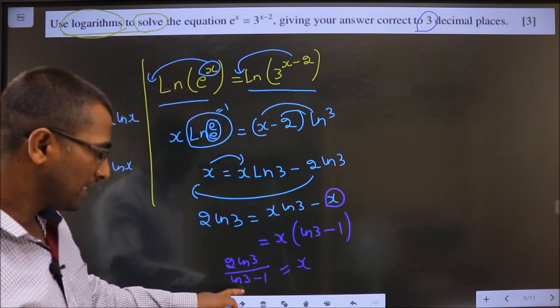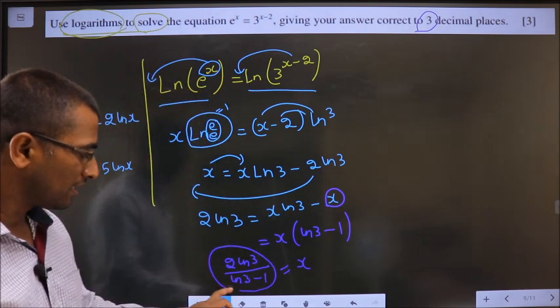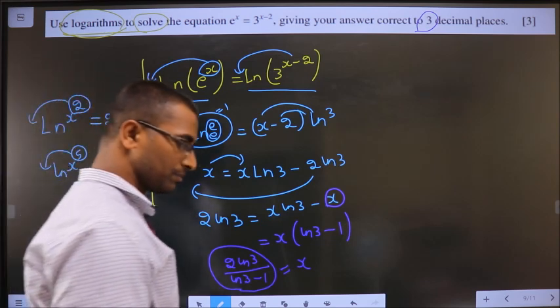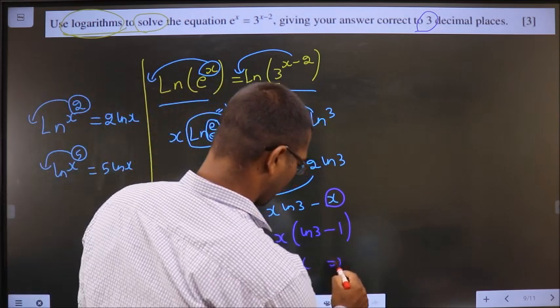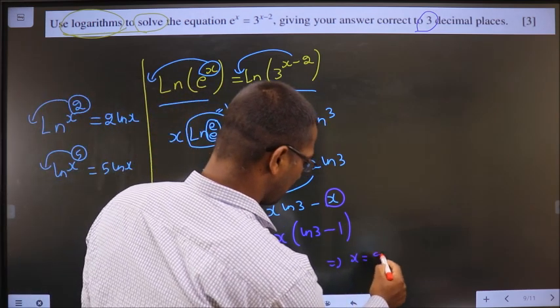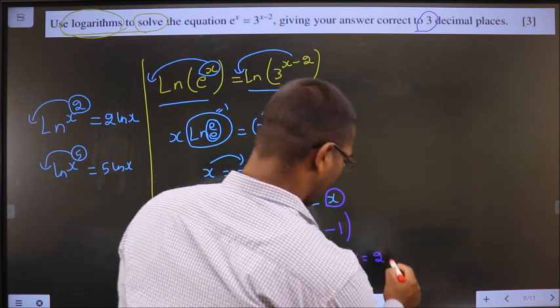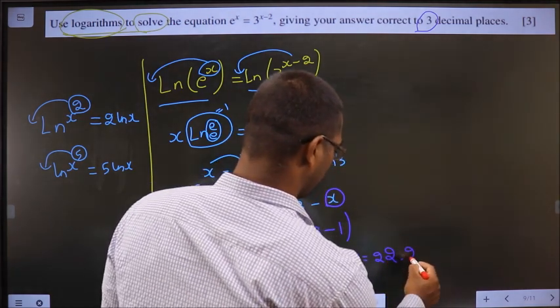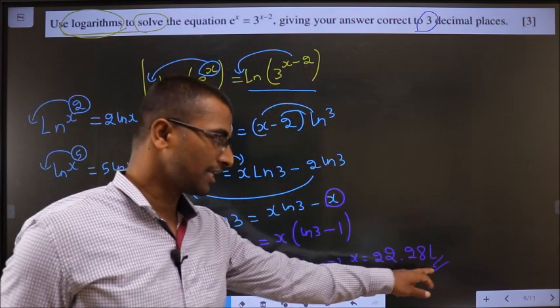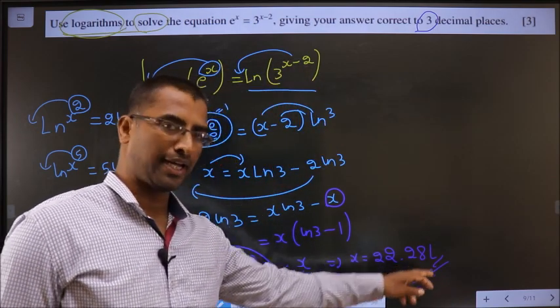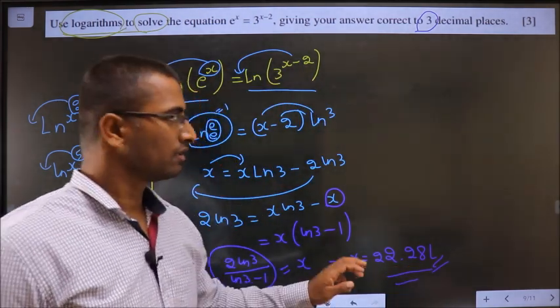So if you put this entire thing in the calculator, you get the answer to be x is equal to 22.281. They are asking up to 3 decimal. So we should write up to 3 decimal. Okay.